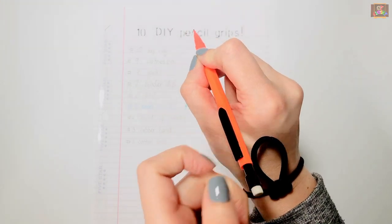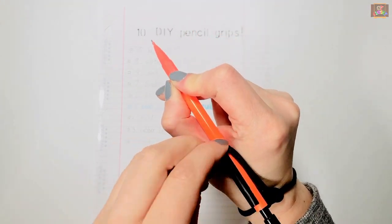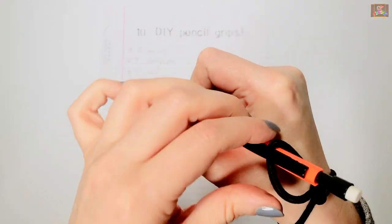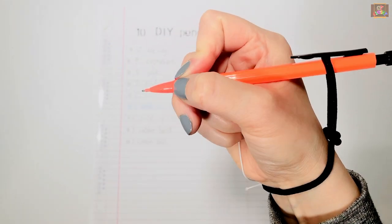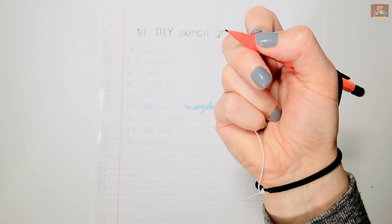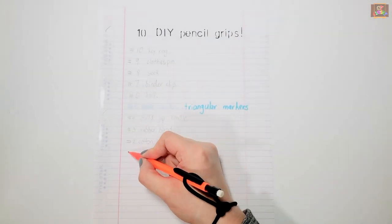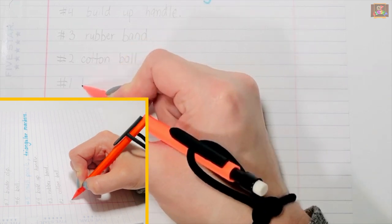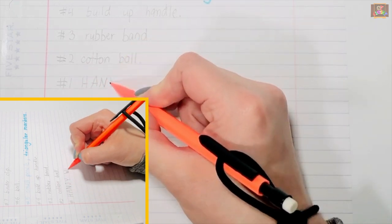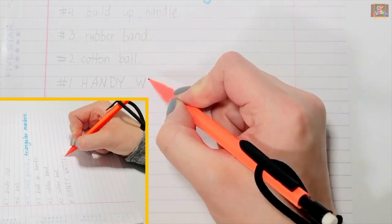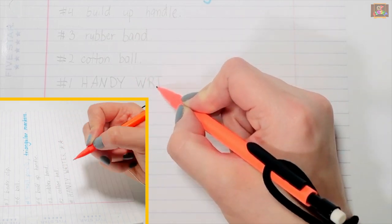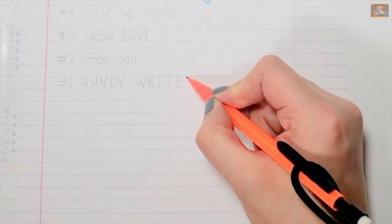The small bead provides cues to keep the ring and pinky fingers curled against the palm. The rubber band pulls the pencil at an angle which facilitates the opening of the web space. It also brings the thumb and index finger in flexion for a mature tripod grasp.